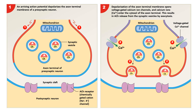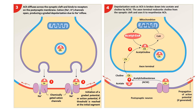An arriving action potential depolarises the axon terminal membrane of the presynaptic neuron. Depolarisation opens voltage-gated calcium ion channels and calcium ions enter the cytosol of the axon terminal. This results in acetylcholine being released from synaptic vesicles by exocytosis. The acetylcholine diffuses across the synaptic cleft and binds to receptors on the postsynaptic membrane, opening sodium–potassium channels and producing a graded depolarisation due to sodium inflow. Depolarisation ends as acetylcholine is broken down into acetate and choline by AChE, and the axon terminal reabsorbs choline from the synaptic cleft and uses it to resynthesize acetylcholine.